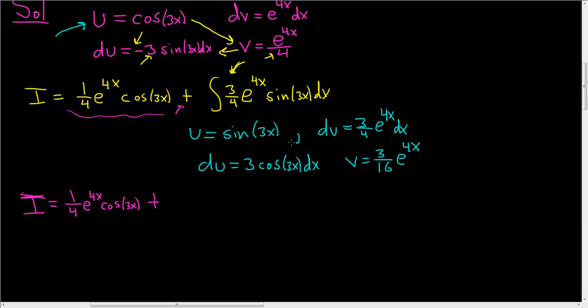And let's use the formula for integration by parts. It's uv minus the integral of vdu. So in this case it's 3 over 16 e to the 4x sine of 3x minus the integral of vdu. This time I'm going to pull the numbers out. So 3 times 3 is 9, minus 9 over 16, and then we have the integral of e to the 4x cosine of 3x.